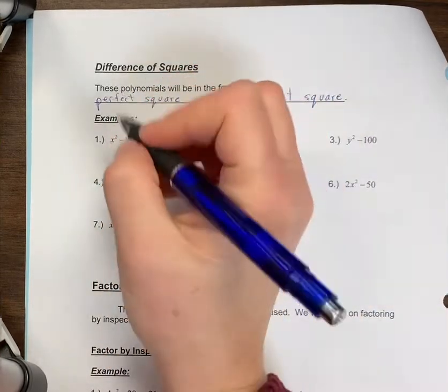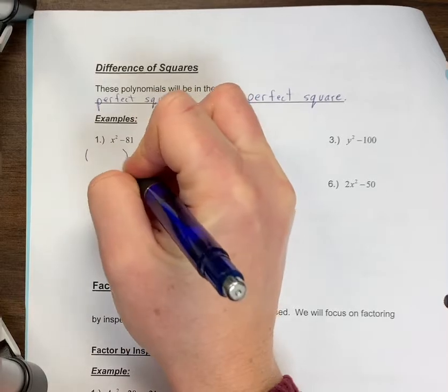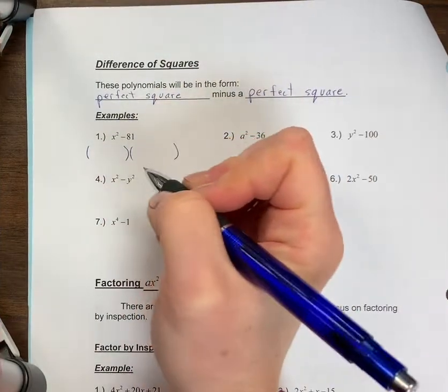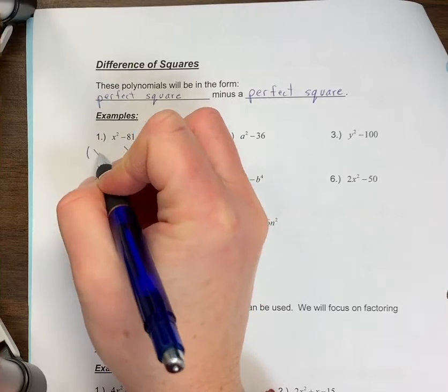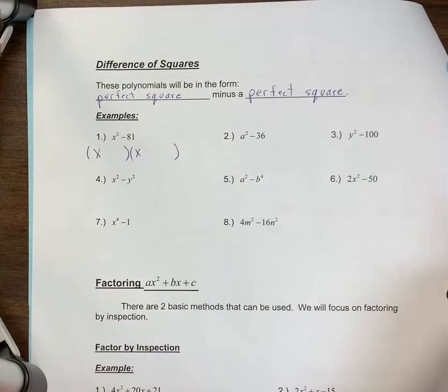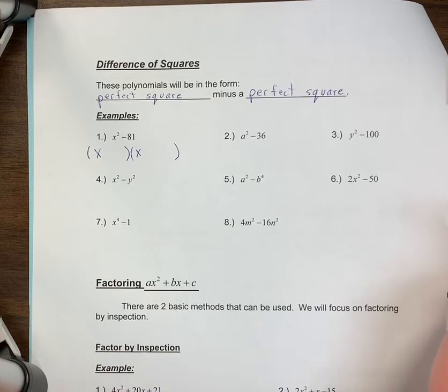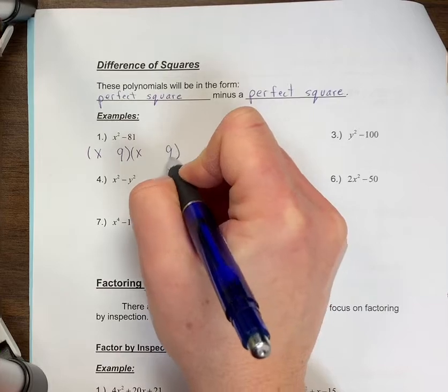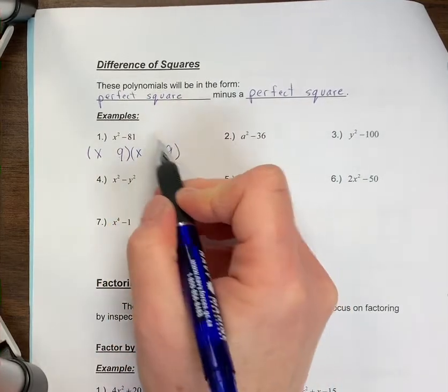To factor this, we open up our brackets and square root the first term. x² when you square root it is x times x. Then you square root the second term, 81. The square root of 81 is 9, so we have 9 times 9 equals 81.